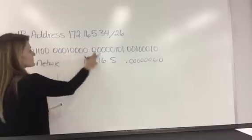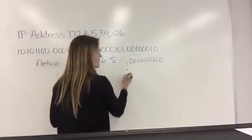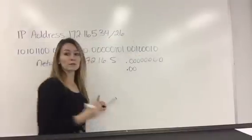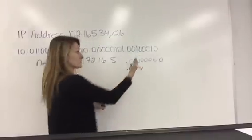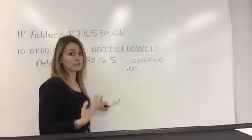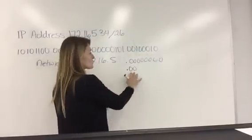So we still have the same first three octets, but this last octet, it has to start with 0, 0 because that's everything, those first two zeros are part of that 26th of the subnet mask.